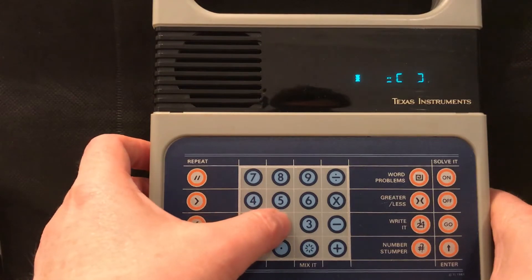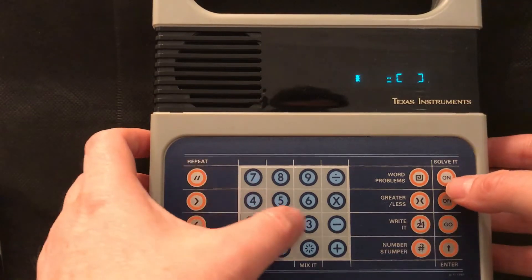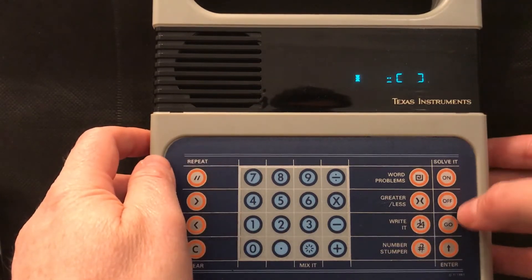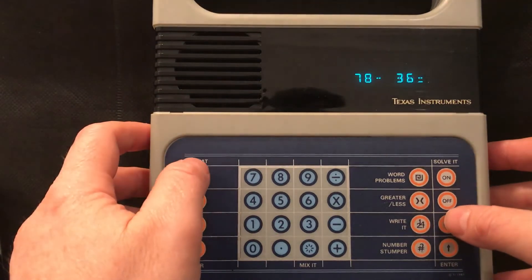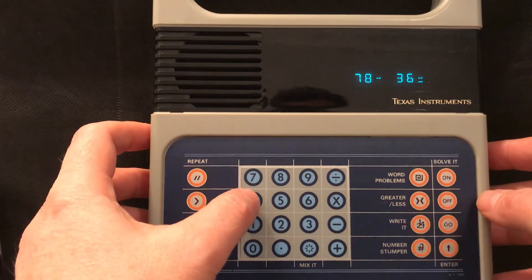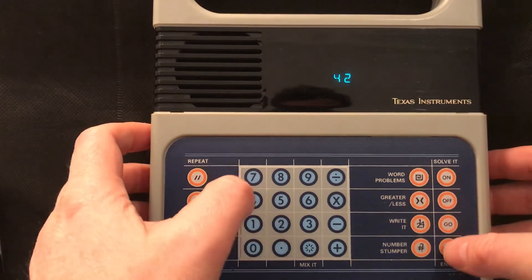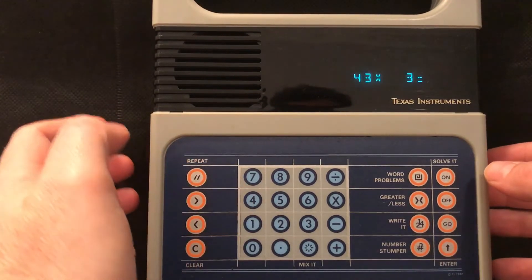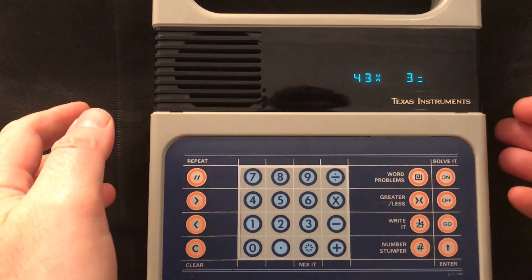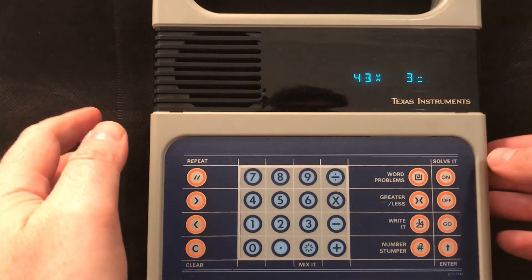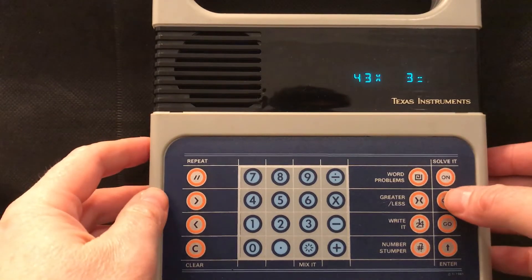And then you can change the level as well. Level two. And there's a level three as well. So let's just try it with level two. 78 minus 36 is what? That's 42. That's right. 43 times three is what? And it's doing a multiplication one there again.